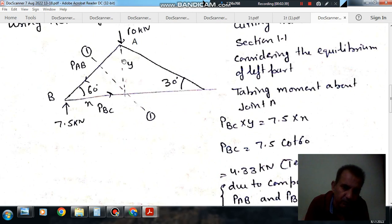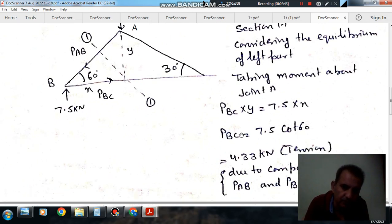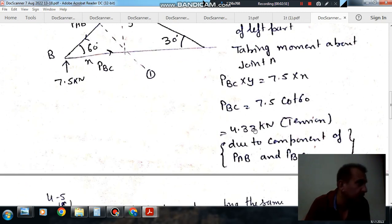So PBC into y should be equal to 7.5 into x. So PBC will be equal to 7.5 by x by y. x by y is tangent 30°, so PBC equals 4.33 kN.